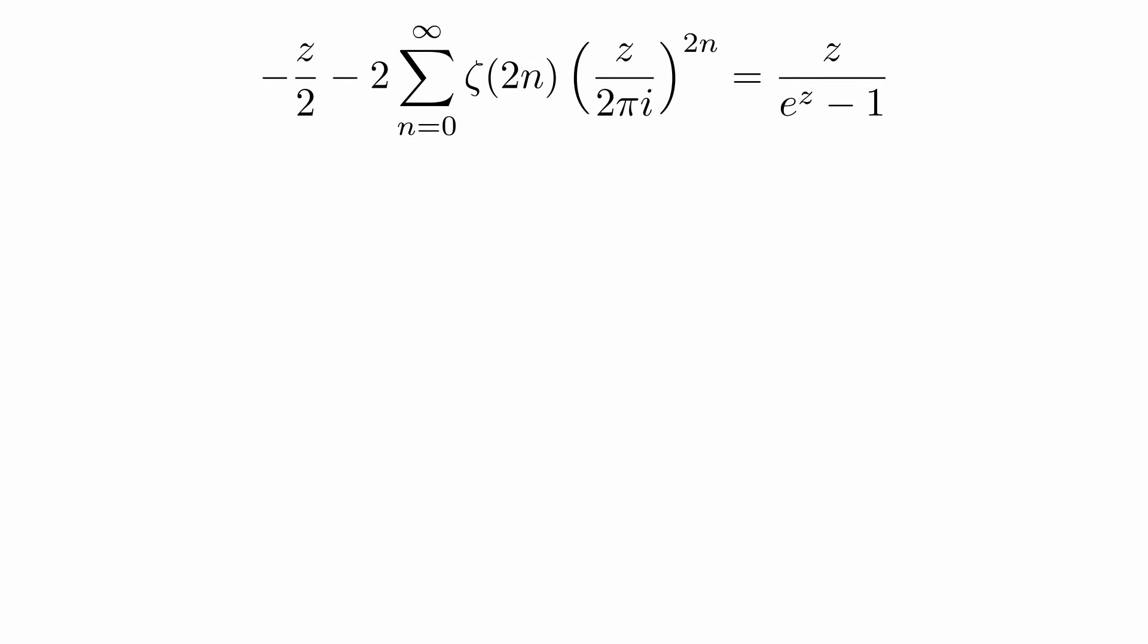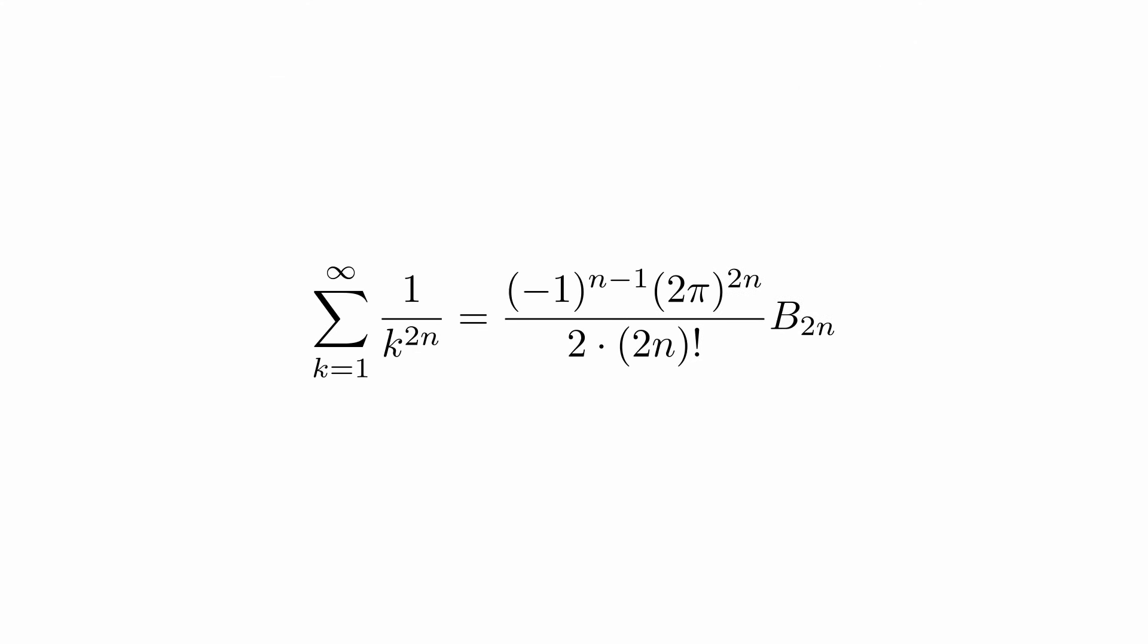Let's now go back to this equation. We can plug in the Taylor series at zero of the right side. Now we just have to compare the coefficients on both sides and get this expression for the zeta function at even integers. So we have found the value of this infinite sum.